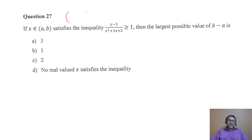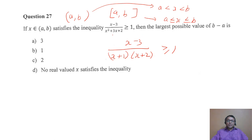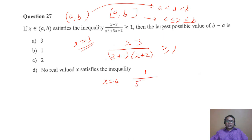Understand bracket notation: a curved bracket means a and b are NOT included (strict inequality), a square bracket means they ARE included. To solve (x−3)/[(x+1)(x+2)] ≥ 1, we break up the denominator as (x+1)(x+2). This will be ≥ 1 when all three factors are positive. When x > 3, all three are positive, but substituting x = 4 gives numerator 1 and denominator 5×6 — denominator exceeds numerator, so it does not satisfy. All-three-positive case is ruled out.